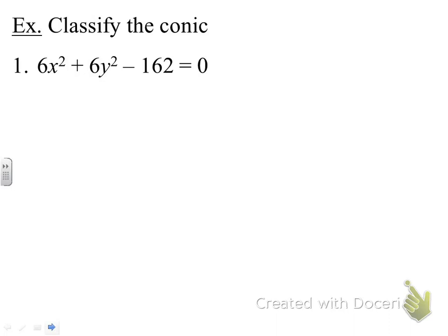For the first one, we're ignoring the rest of the equation here. We're looking at the coefficients in front of the x² and y² terms. We see that the A value is 6, the C value is 6. Since they are the same coefficient, we know that this is an equation of a circle.